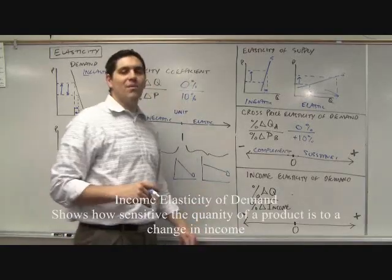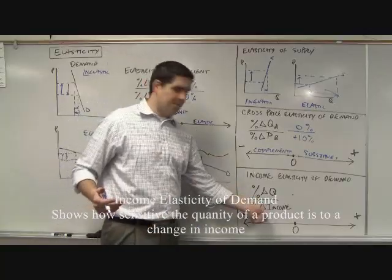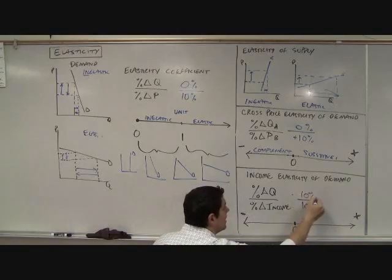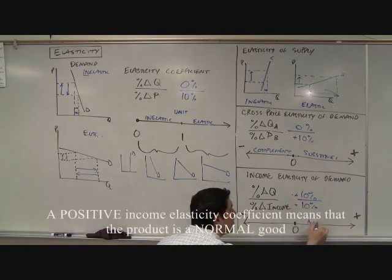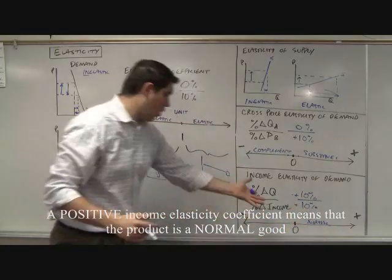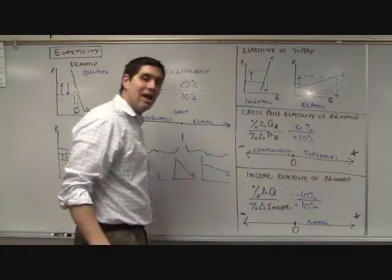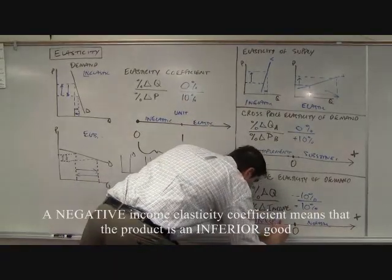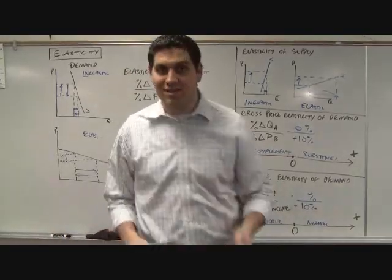Time for income elasticity. It's not about price — it's about income. If there's a 10% increase in income and that leads to a 10% increase in quantity, those are positive numbers, meaning this is a normal good. A normal good means when income goes up, people buy more of it. On the other hand, if an increase in income causes quantity to decrease, that pops out a negative number, meaning it's an inferior good. Income elasticity tells you whether a good is normal or inferior and by how much. Hopefully that makes sense.